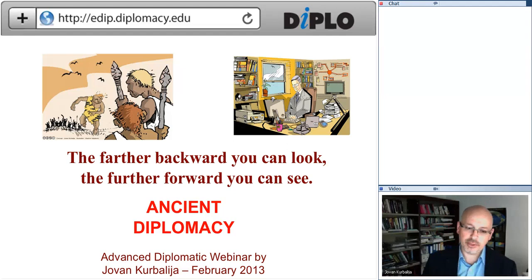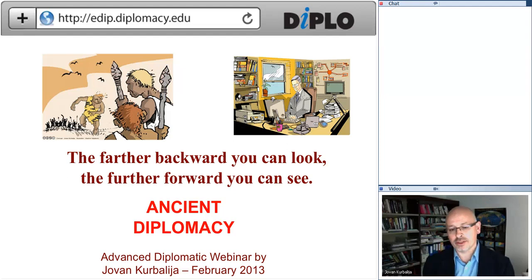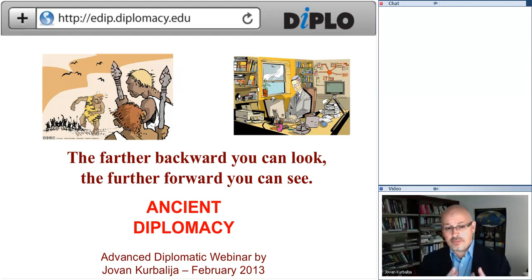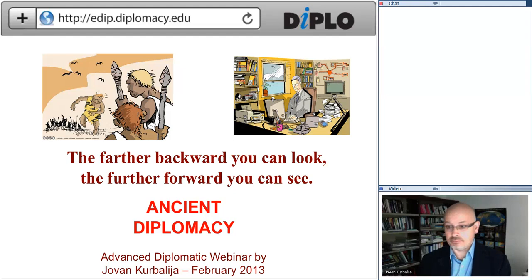We are now moving through the evolution of diplomacy and technology to the period of the fifth millennium BC. The probable dividing line, which we cannot trace back with the highest precision, is the emergence of writing. The previous period we discussed in January is considered the pre-literate period, while the ancient near east is considered the literate period, beginning with the invention of writing in the Sumerian kingdom — in what is now Iraq or Mesopotamia.